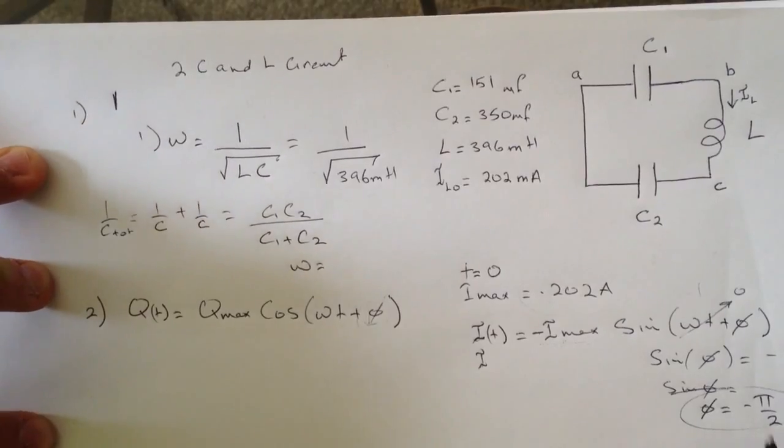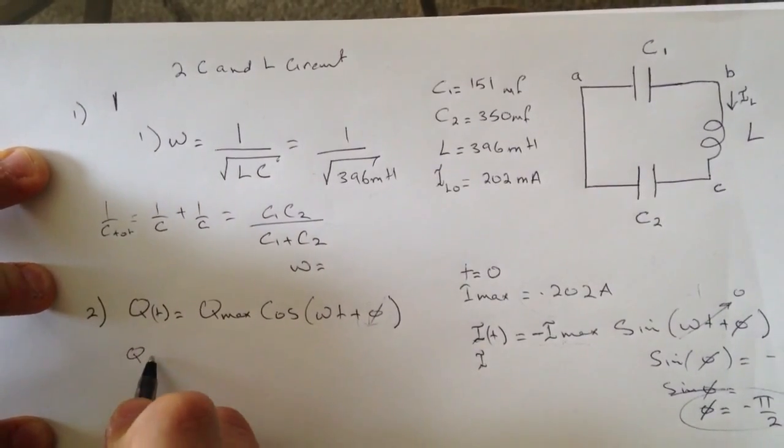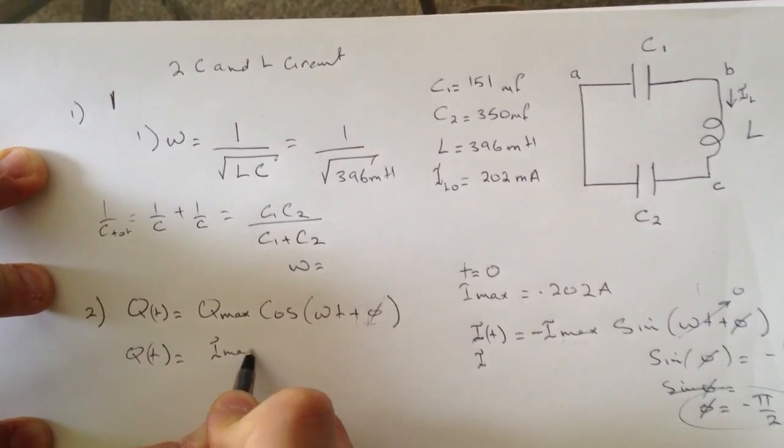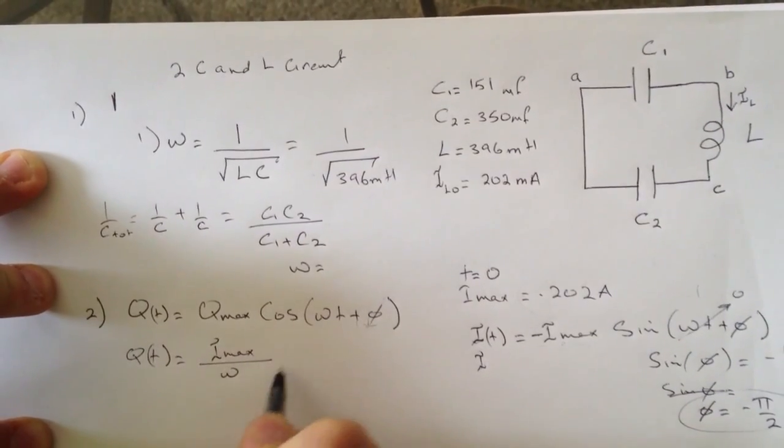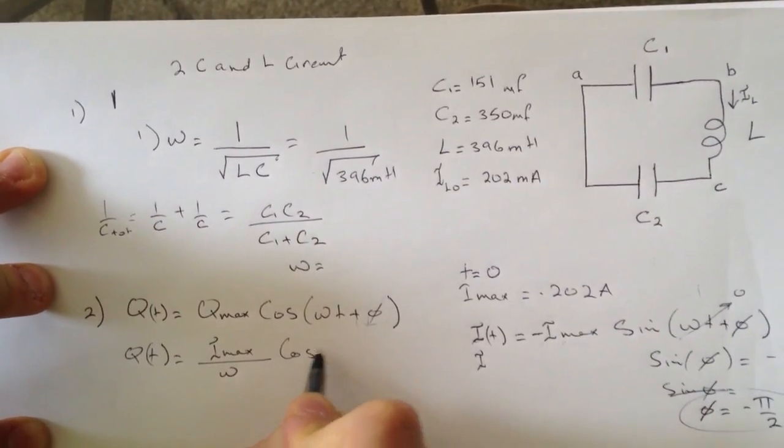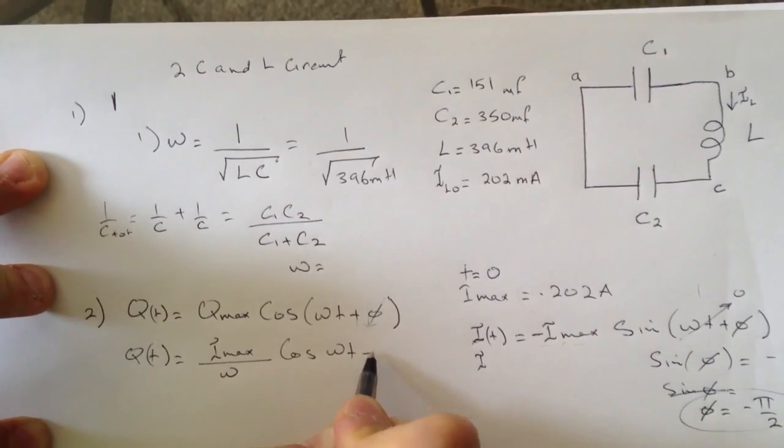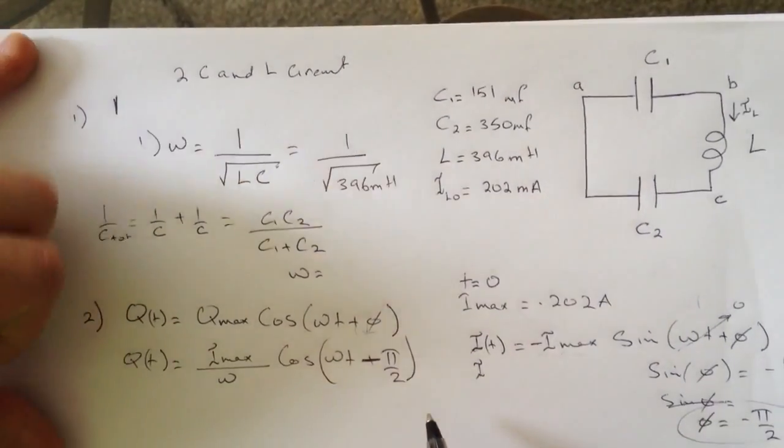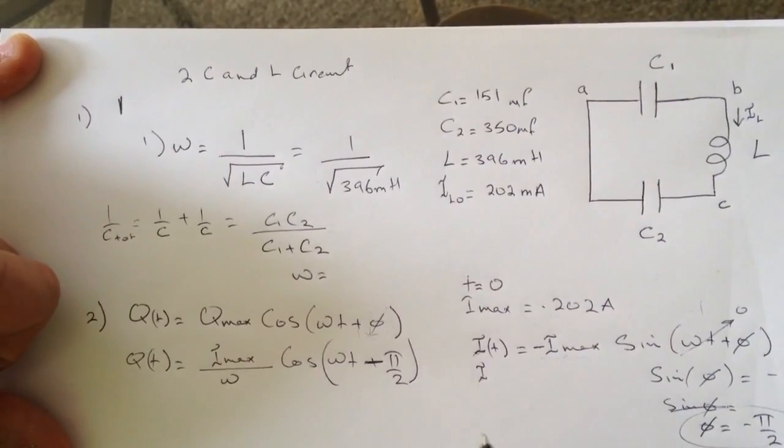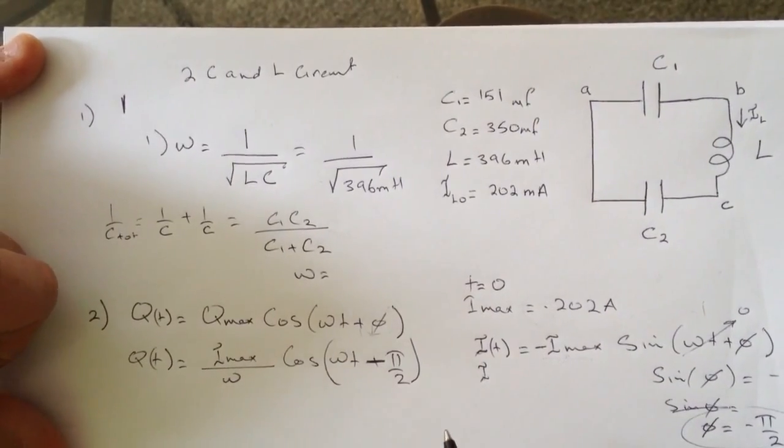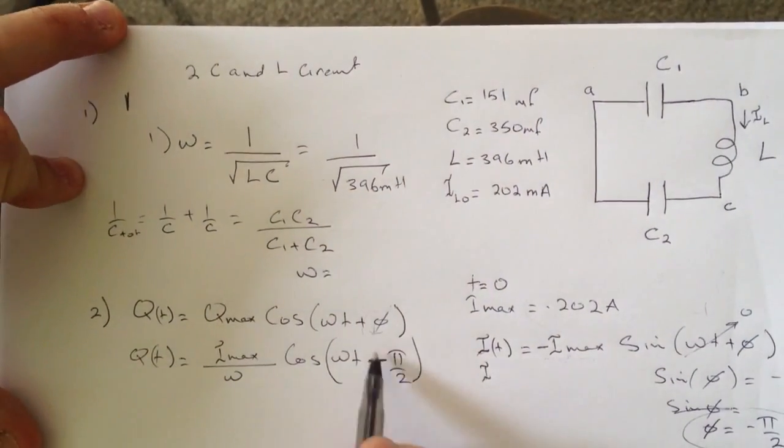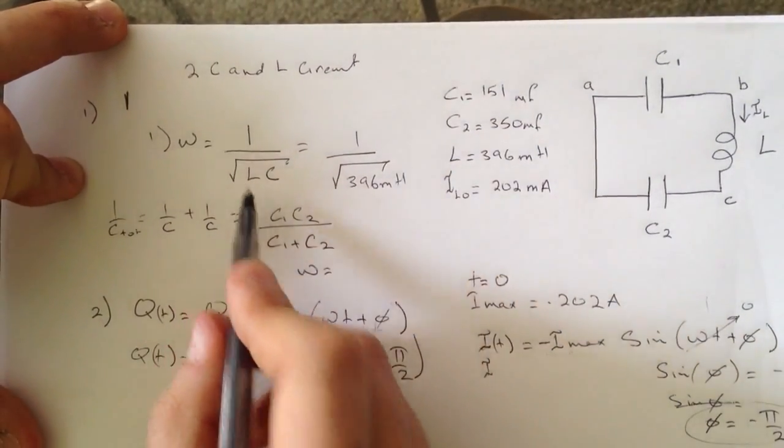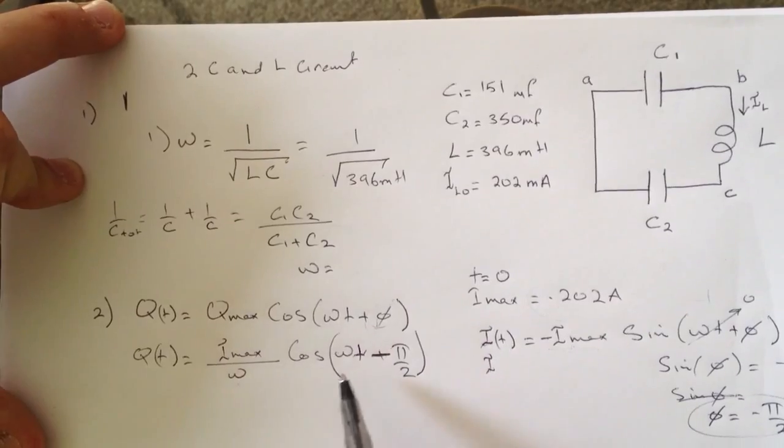So we'll go through this Q(t), and then Q max is just I max over omega times cosine of omega t minus pi over two. Substitute everything you have and then you will get the answer. This is negative, don't forget. The omega you'll get from here, I max you have it, and the omega will be the same here.